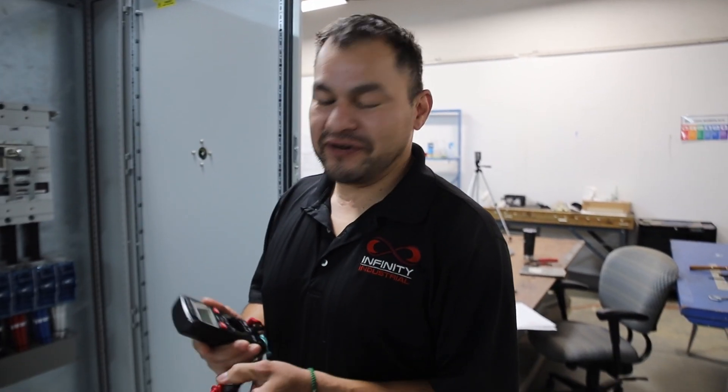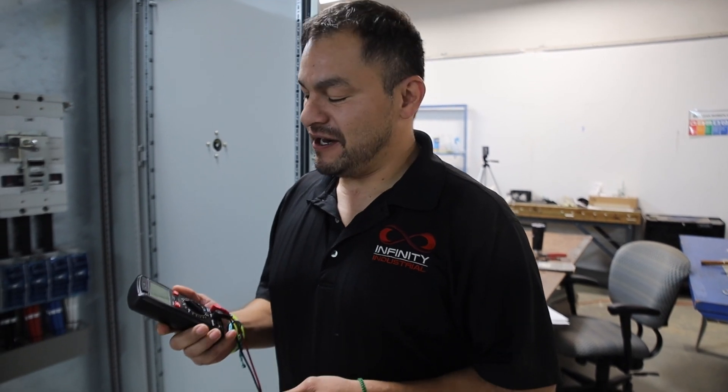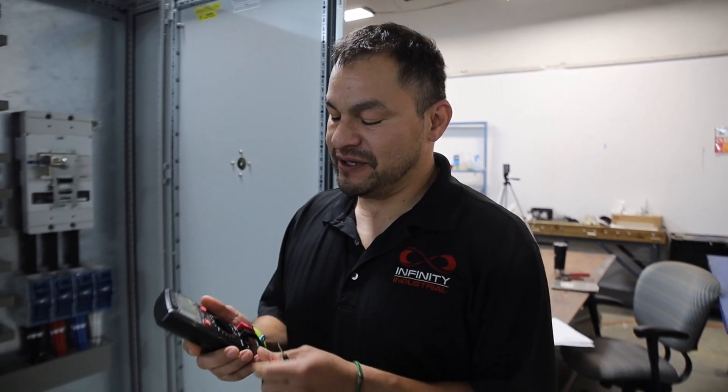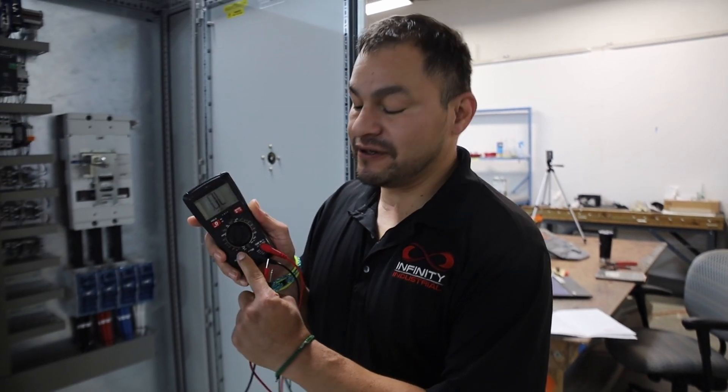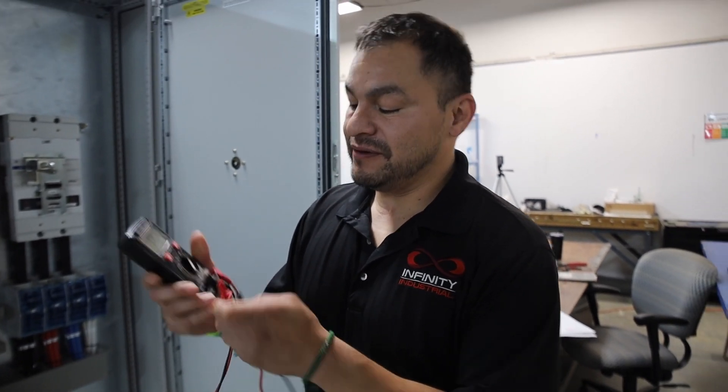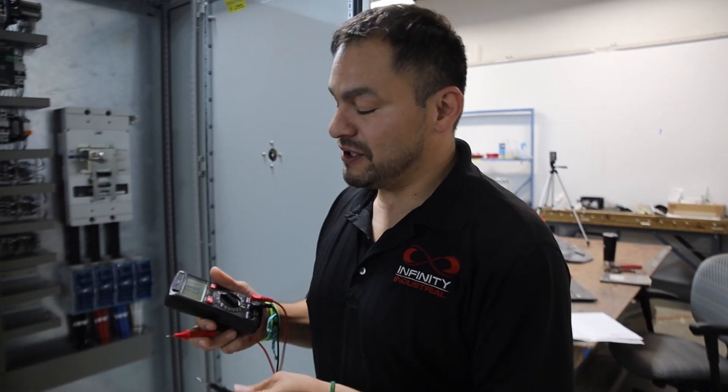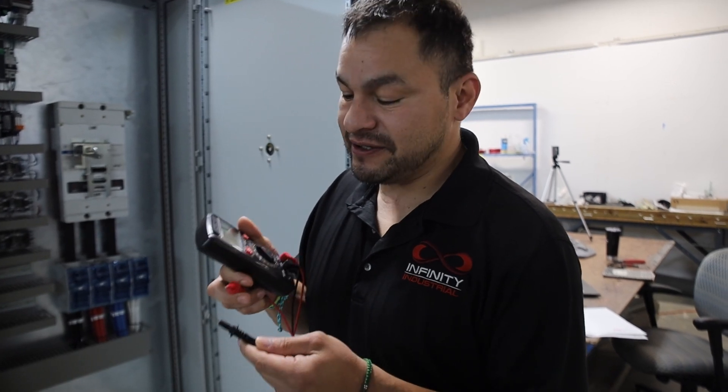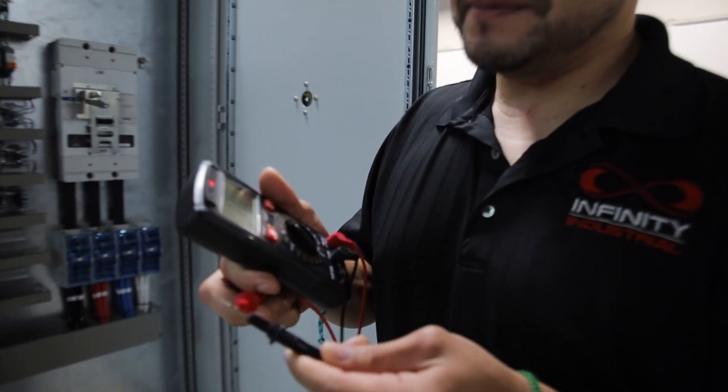Alright, so to check continuity first of all you have to have a multimeter or any meter that can check continuity. For instance, I have it set on continuity already. And also to check your multimeter is working, you put both of your leads together and it makes a little beep sound, so that means it's working.